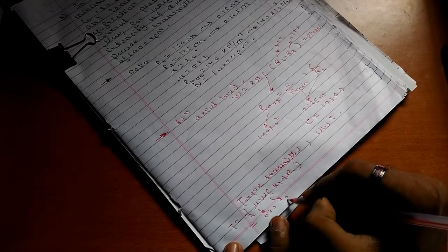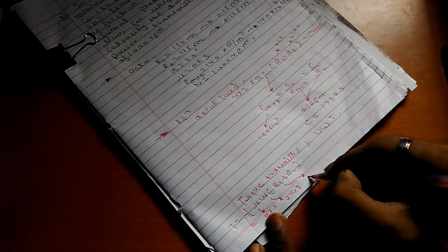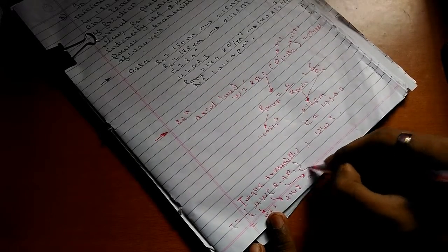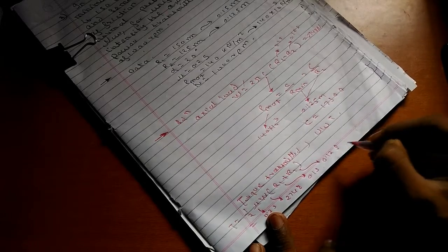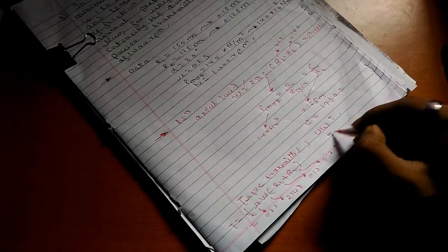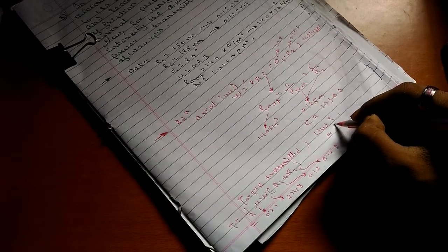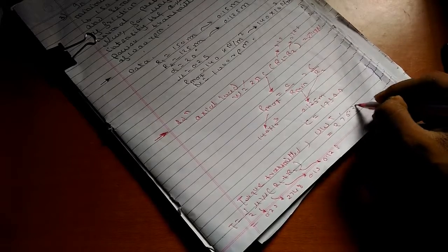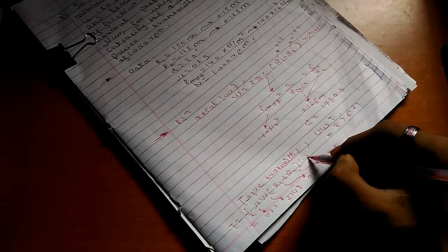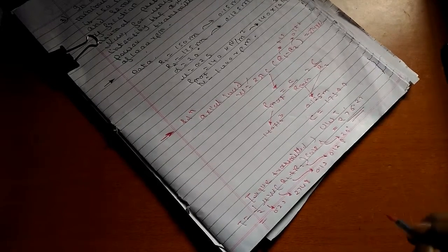Where R1 equals 0.15 and R2 equals 0.125. By putting these values, we get T as 276.27 cosec alpha, where alpha equals 20 degrees. So this is the answer.